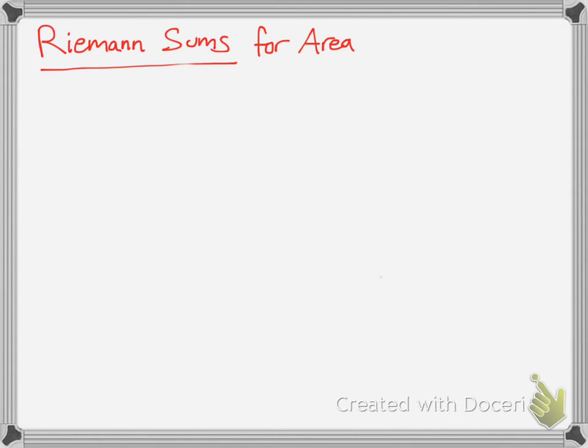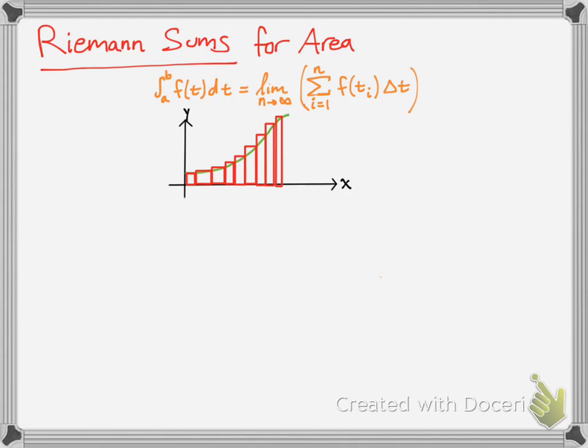We're going to talk a little bit about integrals and Riemann sums for area, just the basic stuff. If you have the integral from a to b of f(t) dt, the formula for Riemann sums is the limit as n approaches infinity. Pretty much, you're just going to be adding up an infinite number of rectangles. That's what the n approaches infinity, an infinite number of rectangles. And there's that formula for the change in t.